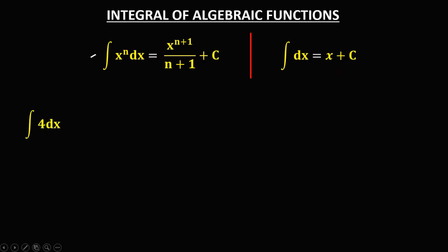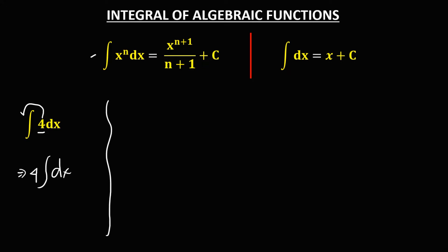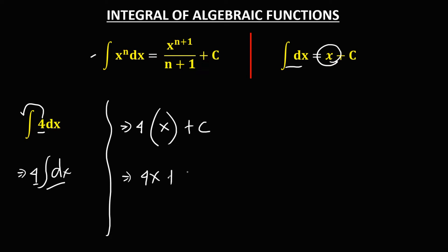For this given, the integral of 4 dx. First we need to rewrite this given — we can put the constant outside the integral. So this becomes 4 times the integral of dx. Then to evaluate, just copy this constant times the integral of dx, which is x. So therefore the integral is 4x plus c.